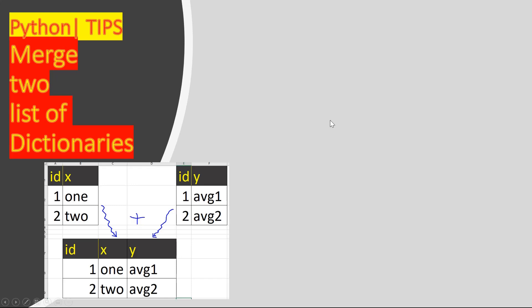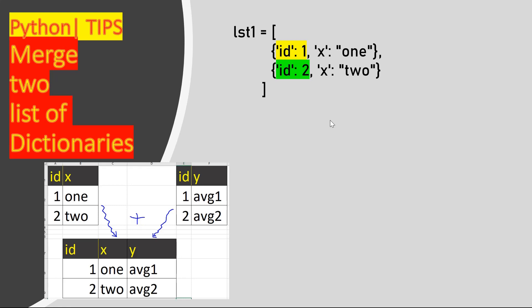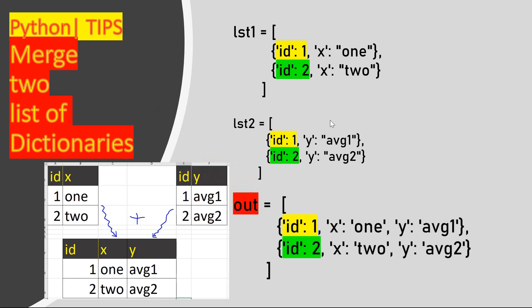So it's like merging two tables. If you consider these as a list of dictionaries, the first list looks like an array of two dictionaries. The first row has keys ID colon 1 and X colon 1; the second row has ID colon 2 and X colon 2. Similarly, the other list has a key Y instead of X. If you merge them, the output would have each row containing three keys: ID, X, and Y.